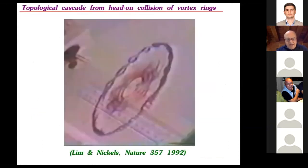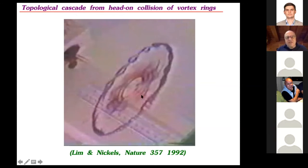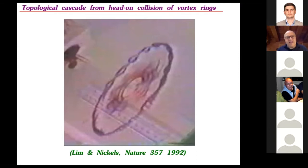Luke Alfman's talk suggested I show again this beautiful experiment by Lim. I give it a different reading under the title 'topological cascade.' Two vortex rings — one red, one blue — are colliding against each other. After collision, a number of reconnections occur and little ringlets form. We have an immediate cascade of topology from two big rings to a number of small rings, simply because reconnections take place due to the symmetry of the system instantaneously at all points around the rings.